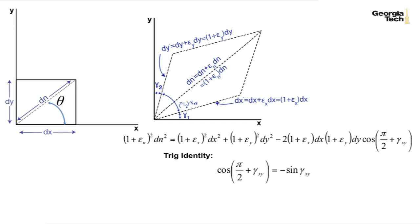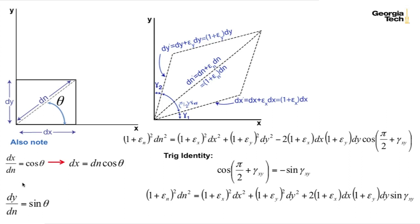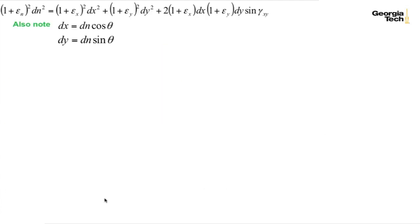This relationship holds true. And so therefore I can change this last term to minus sine of gamma xy. And so also note for our original block that adjacent over hypotenuse, or dx over dn is equal to cosine theta, or dx equals dn cosine theta. And similarly for dy over dn sine theta, dy equals dn sine theta. Let's take all of those results now.